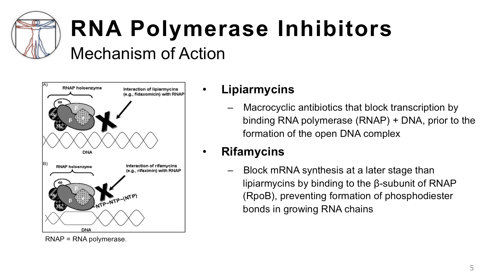Recall that transcription is the first step of gene expression where DNA is copied into messenger RNA. In contrast, the rifamycins block a later stage of transcription by binding to the beta subunit of RNA polymerase. The inhibition of transcription by either class is bactericidal in nature.